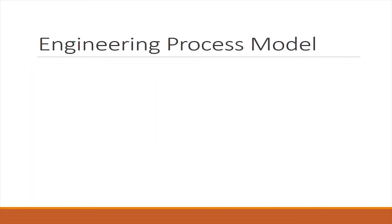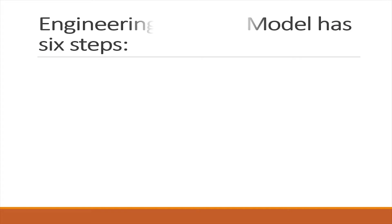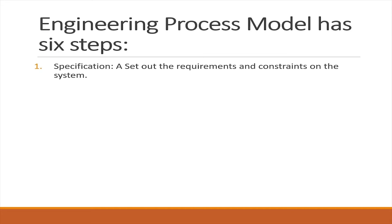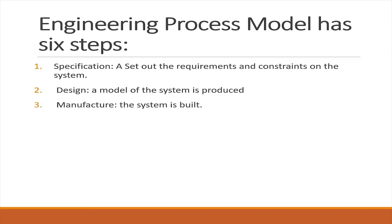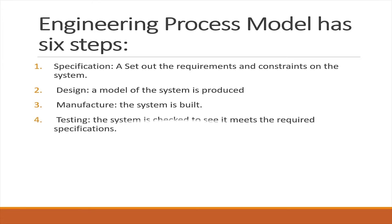In the engineering process model, there are 6 steps. First, specification — this sets out requirements and constraints on a system. Second, design — where the model of a system is produced. Third, manufacture — this is where the system is built. Fourth, testing — this is where a system is checked to see that it meets the required specifications.